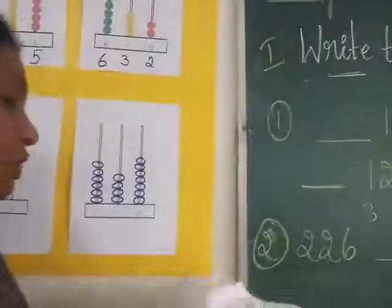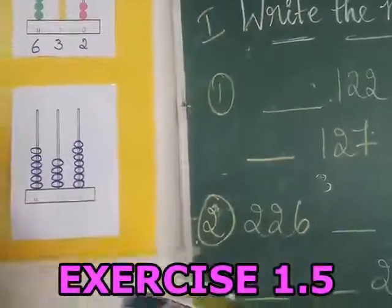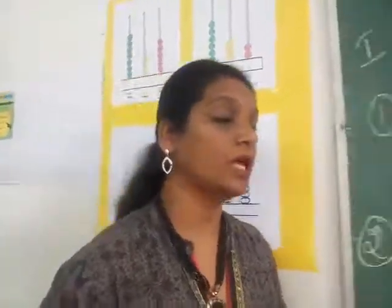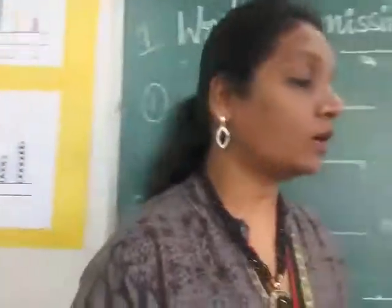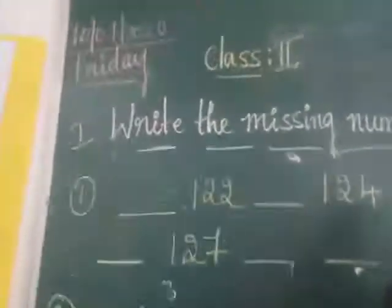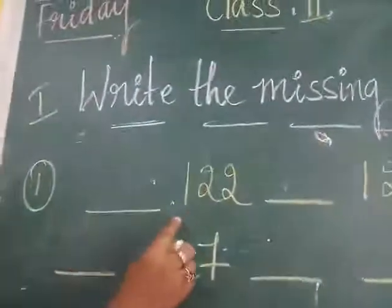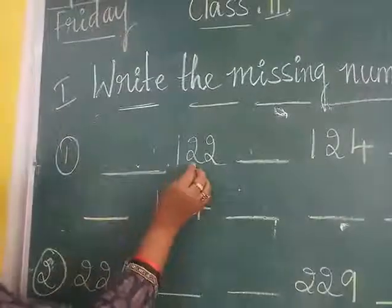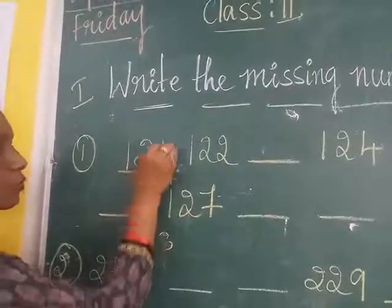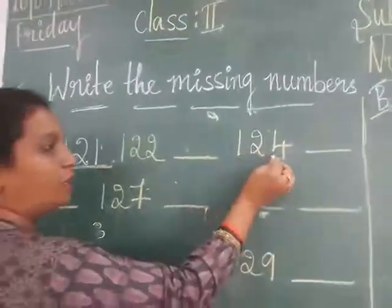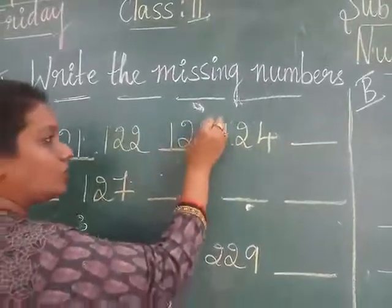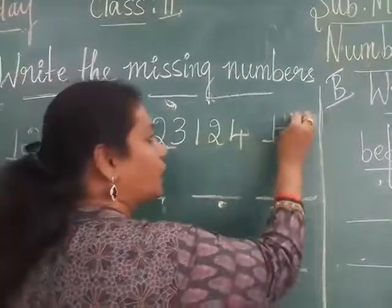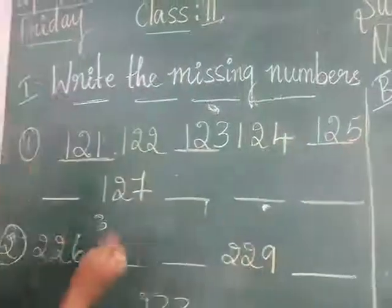Please turn to page number 58, exercise 1.5 — write the missing number. Say them loudly as you write. The first one: there are dashes, 122, dash, 124, dash. Before 122, what number will come? 121. Before 124, what will come? 123. After 124, it comes 125.